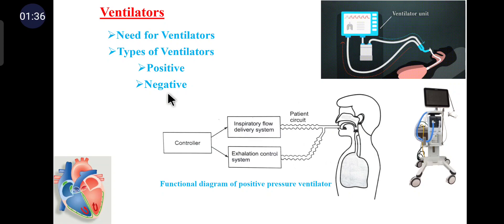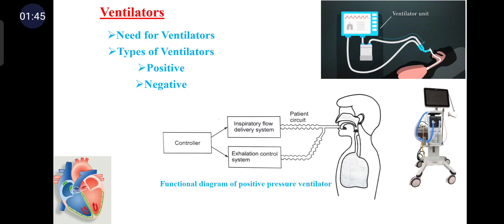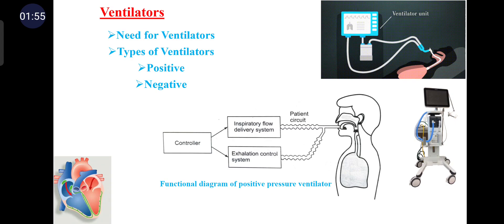The negative pressure moves the thoracic walls outward, expanding the intrathoracic volume and dropping the pressure inside the lungs, resulting in a pressure gradient between the atmosphere and the lungs, which causes the flow of atmospheric air into the lungs. The inspiratory and expiratory phases of respiration are controlled by cycling the pressure inside the body chamber.